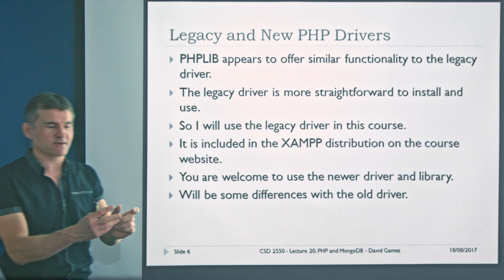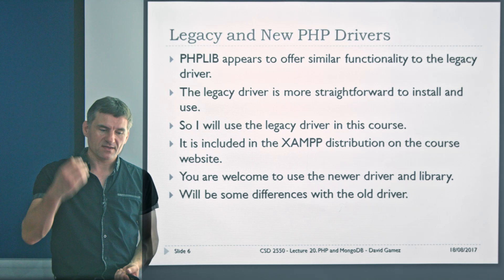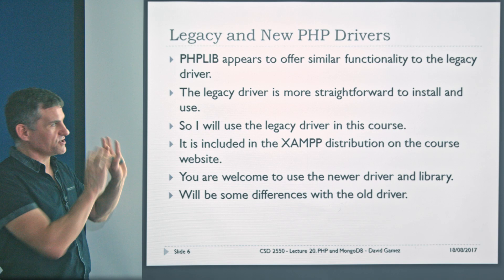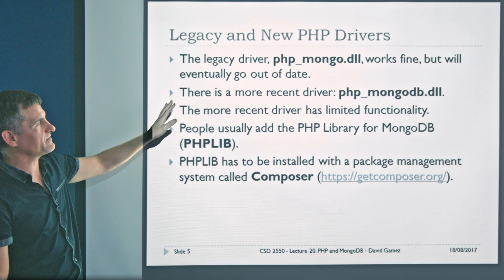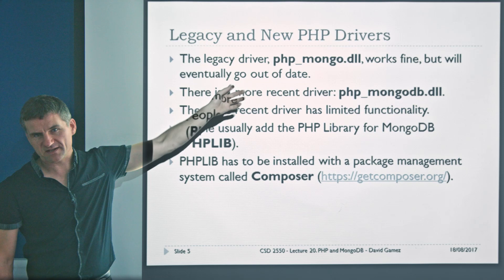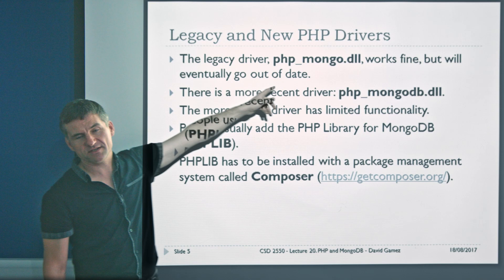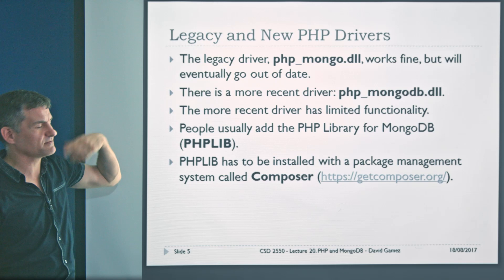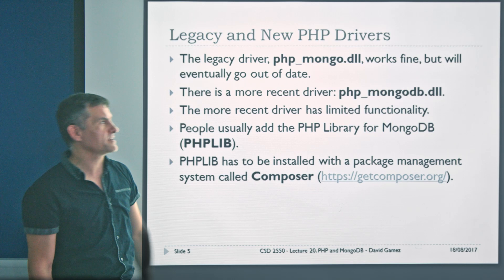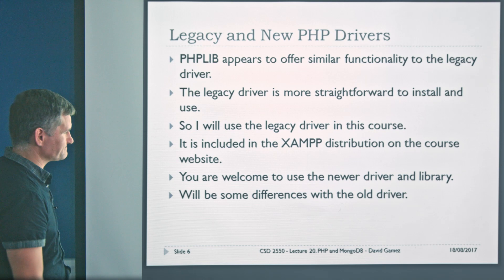I'm going to stick to the legacy driver because it's easy to include it within the portable version of XAMPP, which is what I've done. I've set up the portable version of XAMPP, PHP, and Apache to work with the legacy driver. So if you're just using the portable version, you don't have to do anything at all — the distribution I've given you includes this and it'll just work straight out of the box. If you're installing on your laptop, you'll need to download and install the legacy driver and there'll be a bit of fiddling around finding the right 32-bit or 64-bit version.